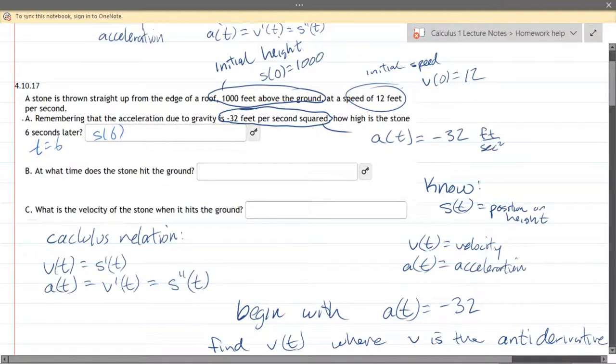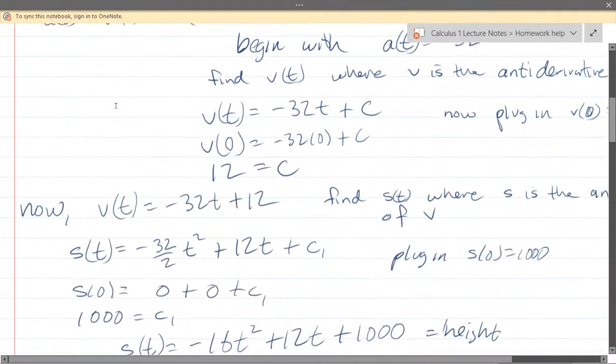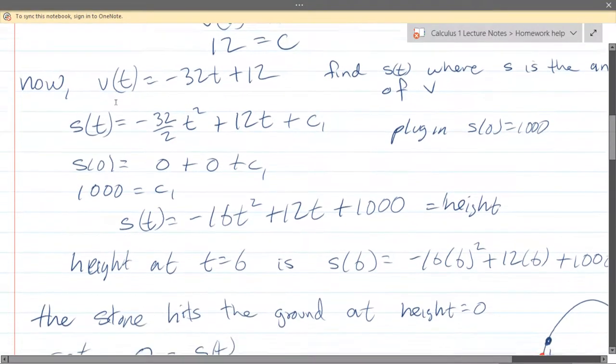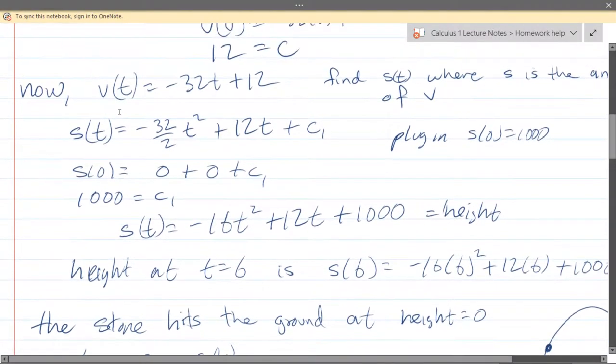Part b, what time does the stone hit the ground. All right it's a little bit tricky if you think about what's happening. The stone hits the ground at height equals zero so all you're going to do is set s of t equal to zero and solve for t.